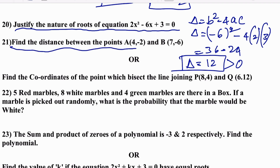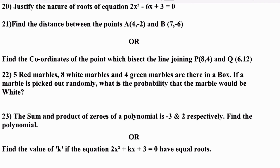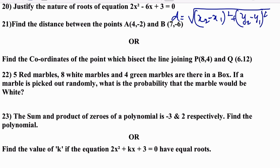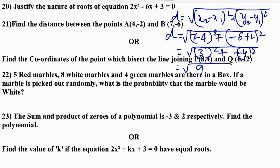Find the distance between A(4, −2) and B(7, −6) using the distance formula. d = √((x₂−x₁)² + (y₂−y₁)²) = √((7−4)² + (−6+2)²) = √(9 + 16) = √25 = 5 units.